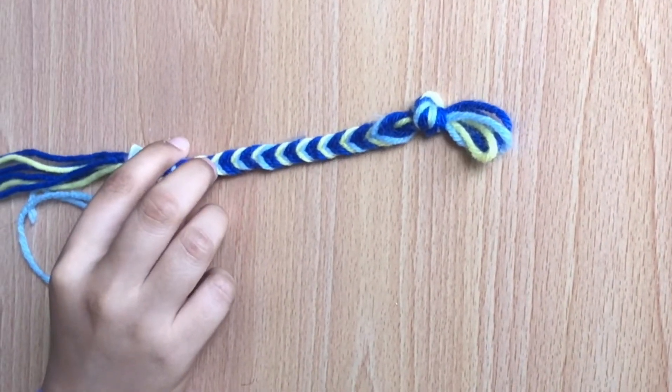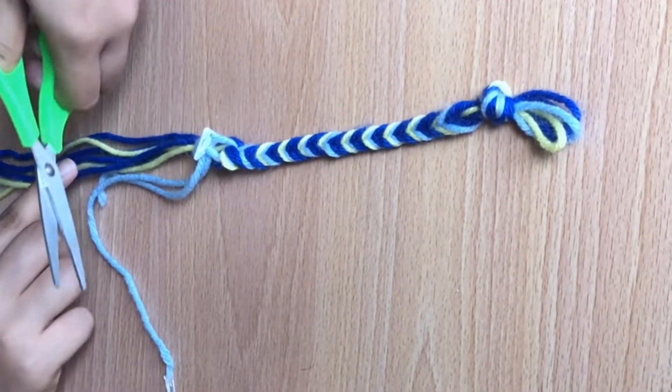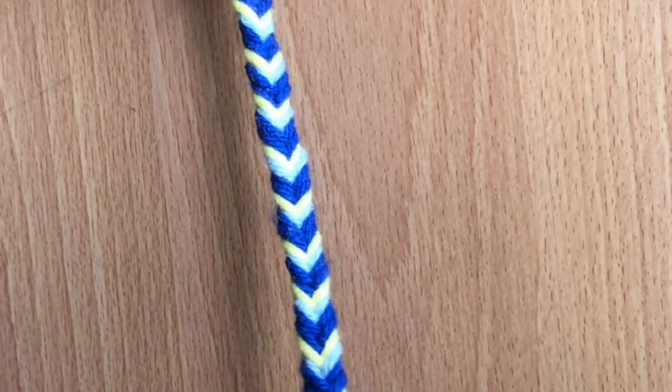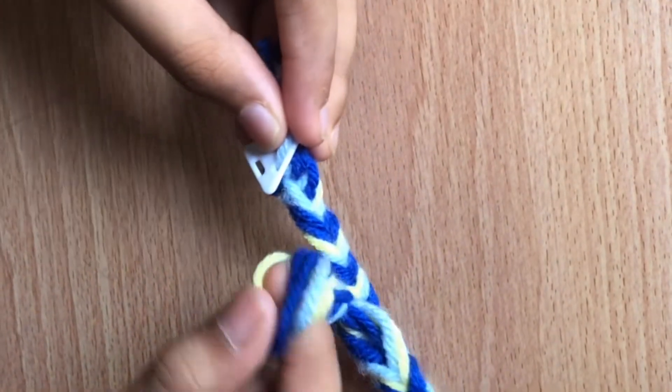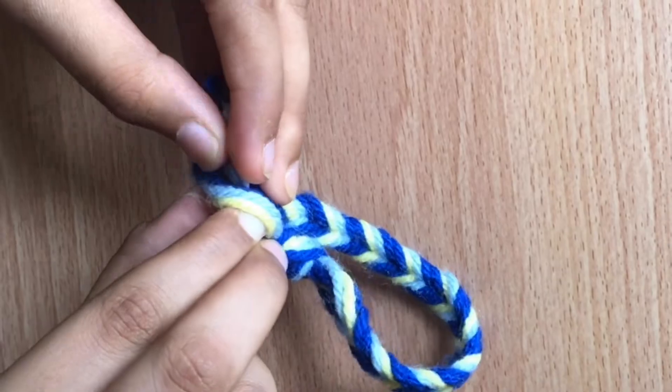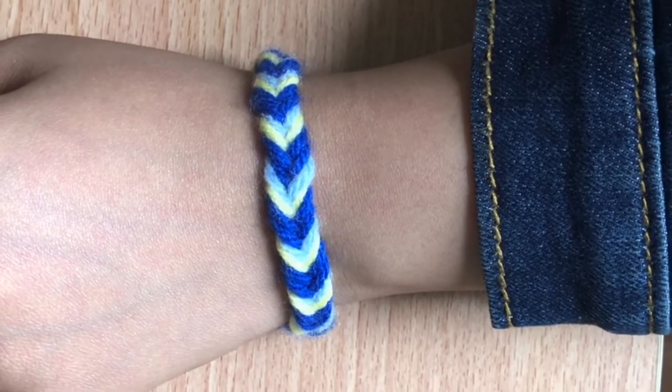To tie the bracelet on simply take the loop side and put it in through the button and this is how it looks.